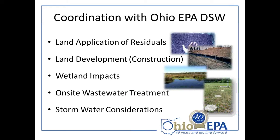For folks wanting to start up a new winery or expand an existing winery, there is some coordination required with Ohio EPA's Division of Surface Water. This includes land applying residuals like crushed grapes and stems back on farm fields, land development for constructing wine tasting rooms and associated structures, impacts to wetlands, on-site wastewater treatment for domestic waste, and stormwater considerations following construction.